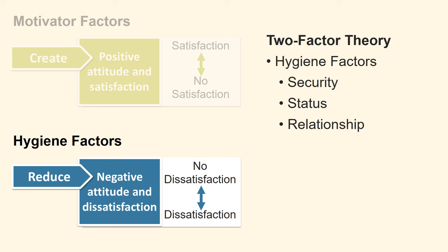Interpersonal relations — the relationship of the employees with their peers, superiors and subordinates should be appropriate and acceptable. There should be no conflict or humiliation element present. The personal life of the employee affects the person's attitude towards work. Management must be aware of this aspect, and employees should be offered health care plans, benefits for family members, employee help programs, etc.